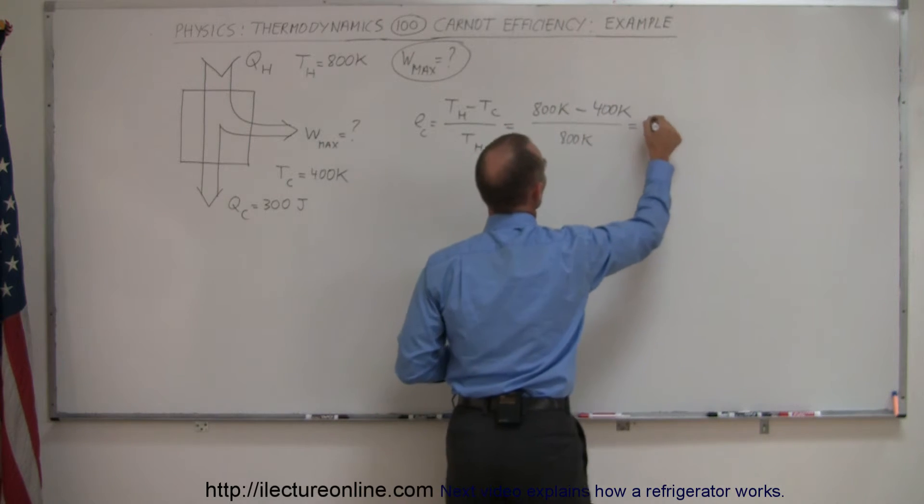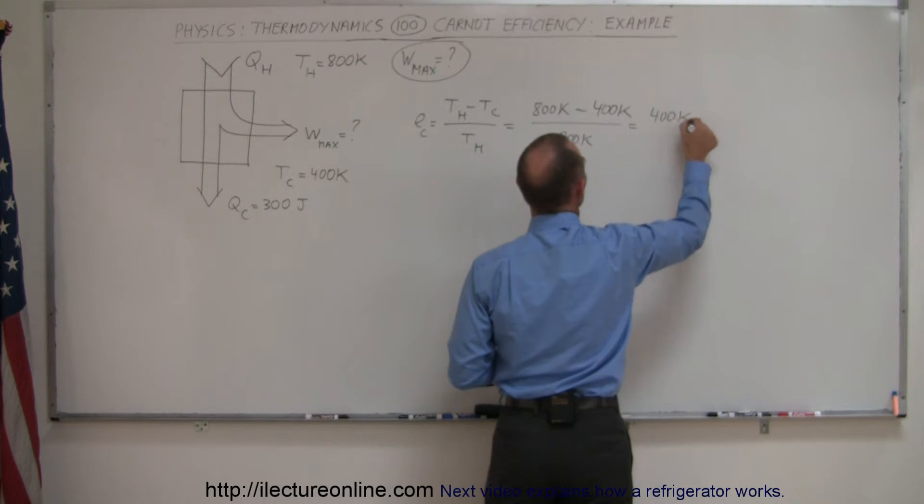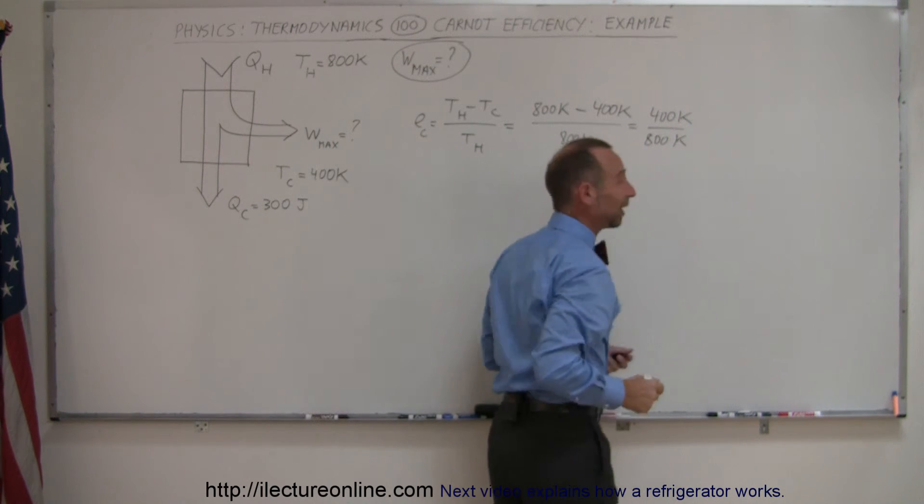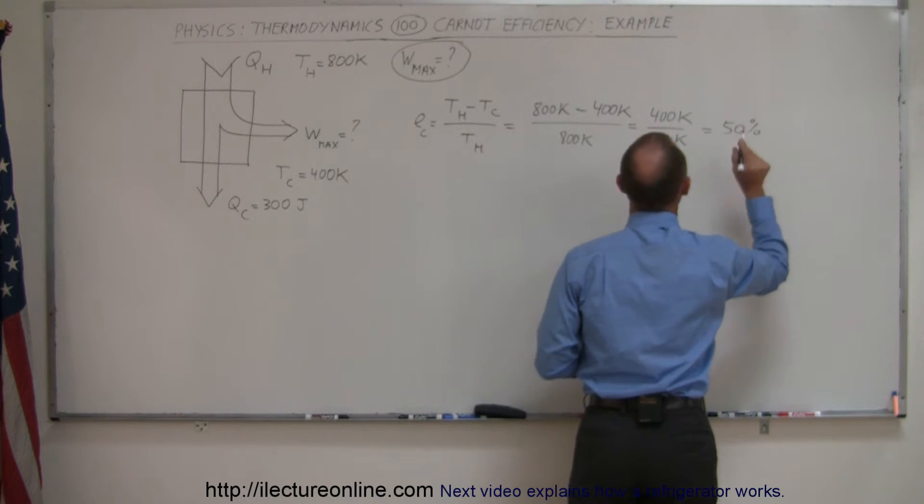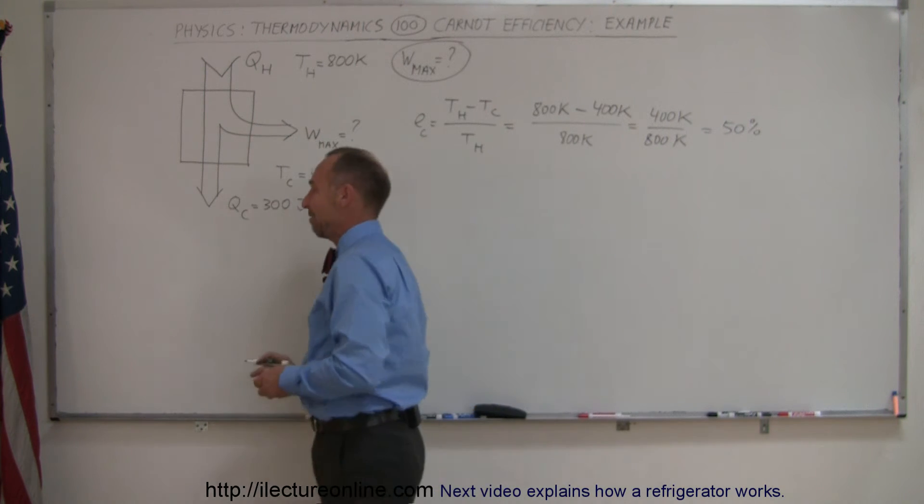Which is 400 Kelvin divided by 800 Kelvin, which of course you can see is 1 half, 1 half is equal to 50%, so that would be the maximum efficiency that this engine can have.